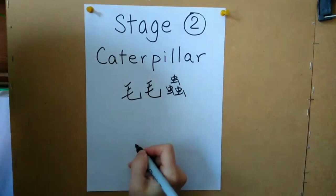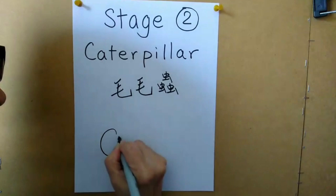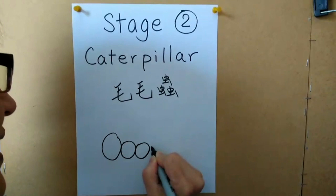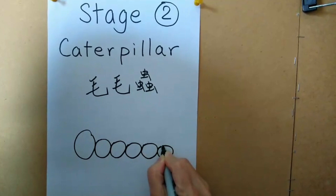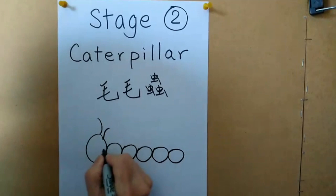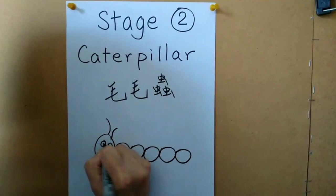Let's count. One, two, three, four, five, six. OK, 還有觸角。然後眼睛。鼻子。嘴巴。